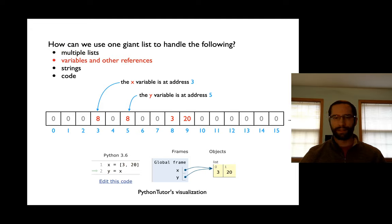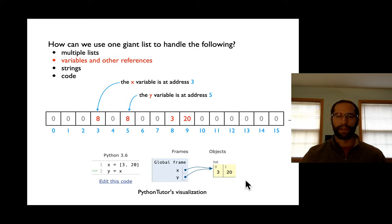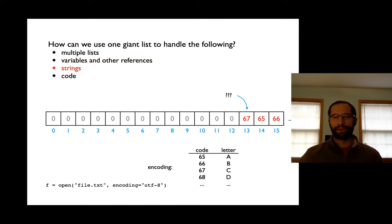Another challenge: how can I have both variables and references? Consider this Python code: x equals some list, y equals x. How do we represent two references to the same list in one giant list? It's not too hard — I use other positions in the list for my variables. The x variable at position 3 contains the address 8, which points to that list. The y variable at position 5 also contains 8 — that's how two variables reference the same piece of data.